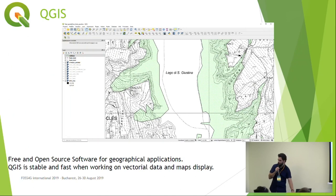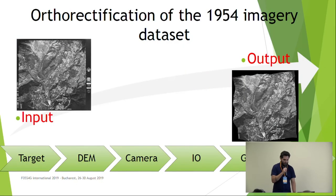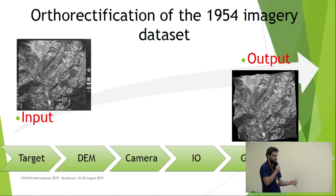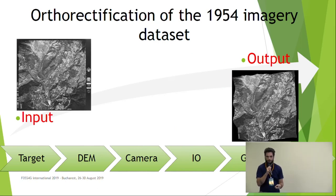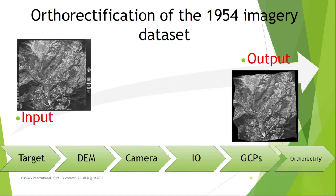The software used were, first of all, QGIS, which I think needs no presentation, and as well GRASS GIS, which I don't think needs any presentation either. As I was saying, the first problem we had to overcome was the orthorectification of the 1954 dataset, which was performed with two different versions of GRASS GIS: 6.4 and 7.4. Orthorectifying means transforming a flat image with its own reference system into a reference system with a datum, and in the process the image is curved and adapted to a digital elevation model of the territory it depicts.